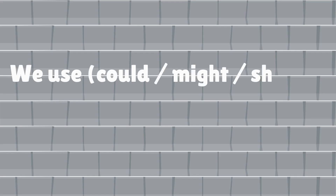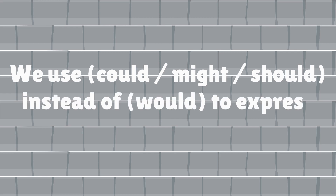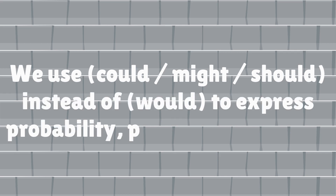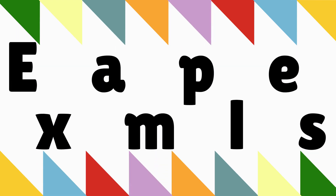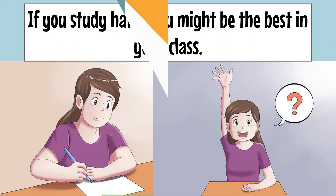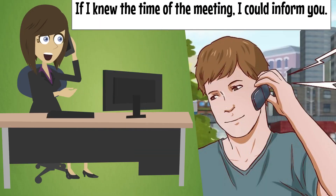We use could, might, or should instead of would to express probability, possibility, or ability. Examples: If you study hard, you might be the best in your class. If I knew the time of the meeting, I could inform you.